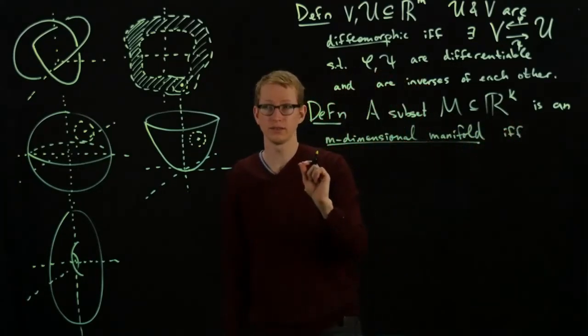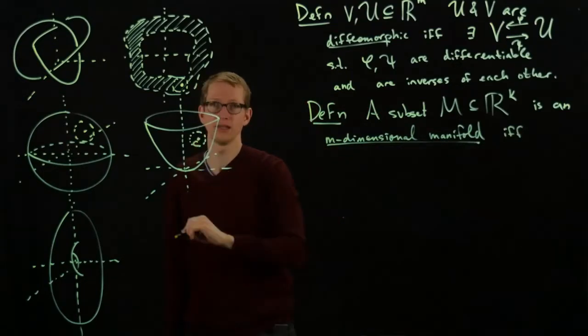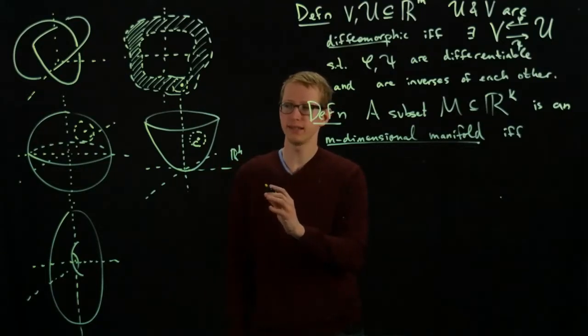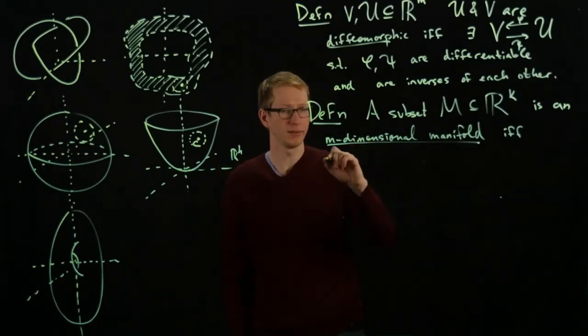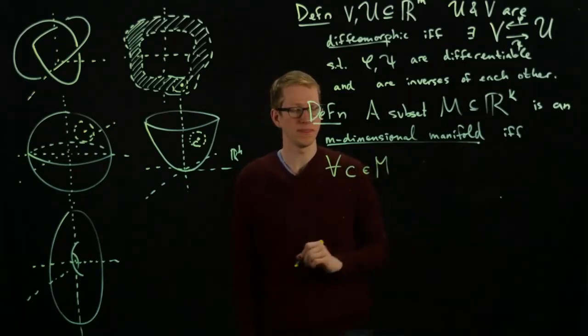for any point in that space, so let's say in this picture we have the point C, if and only if for every point C in my subset M, so if and only if for all C in M,